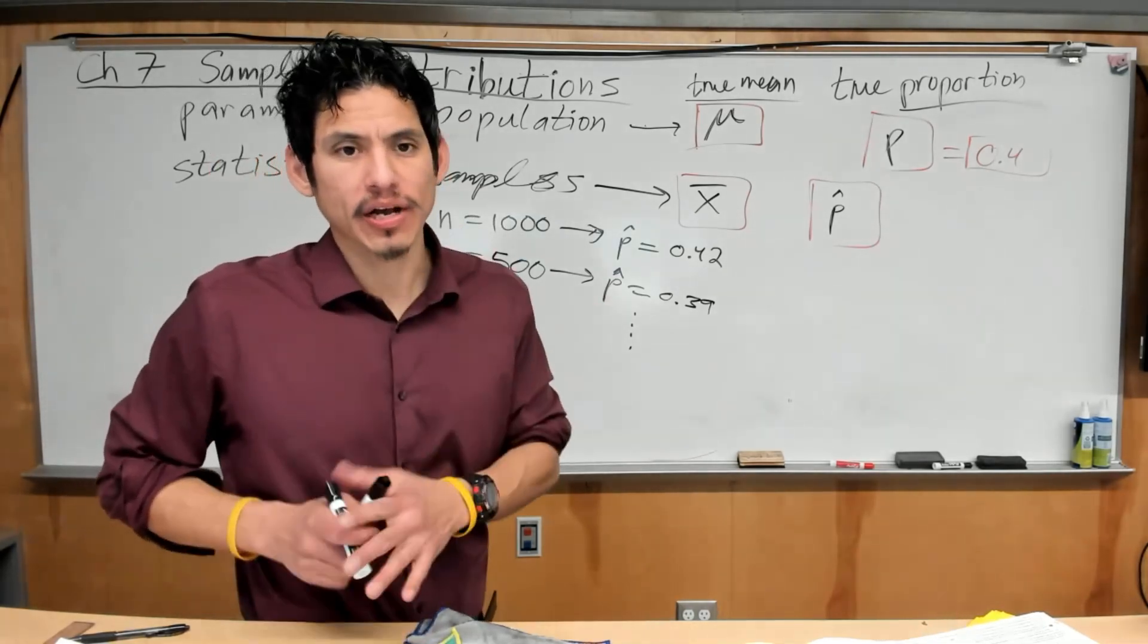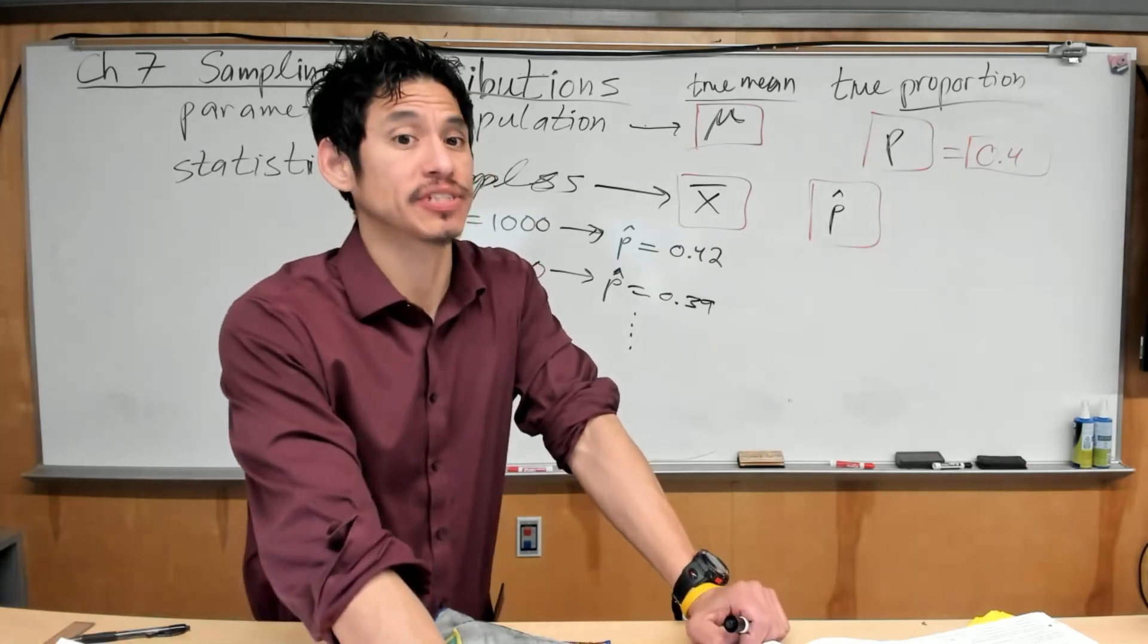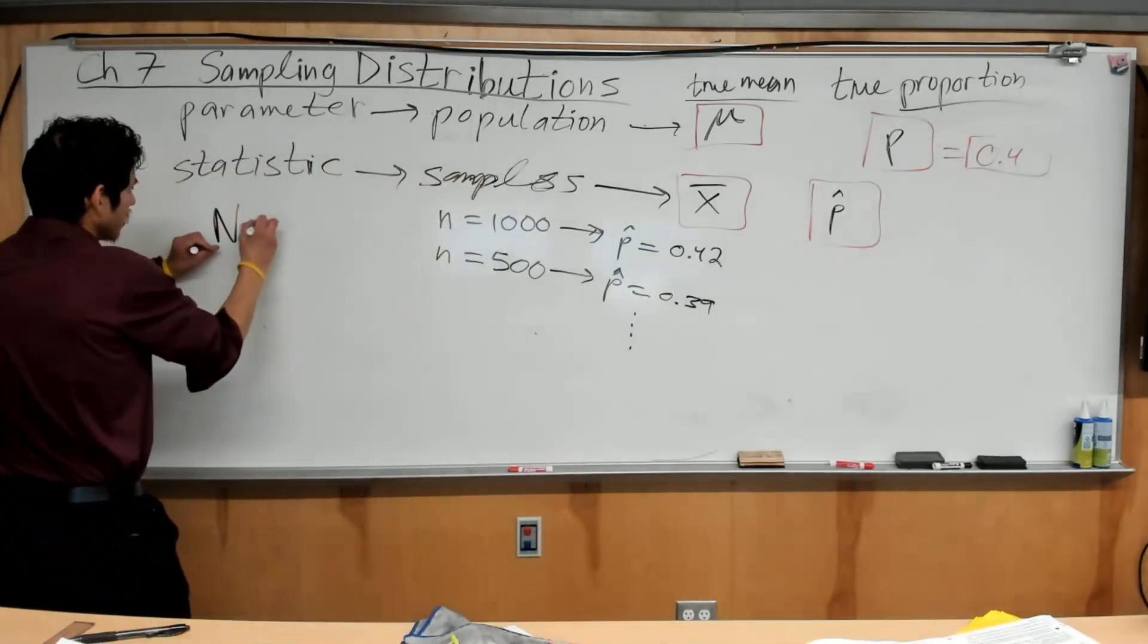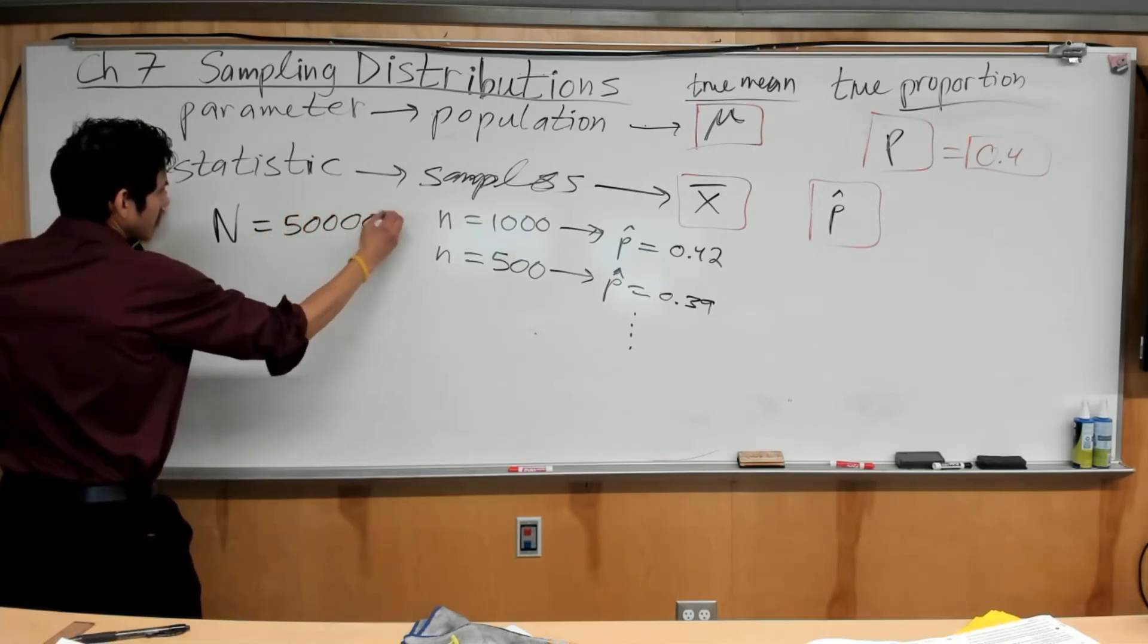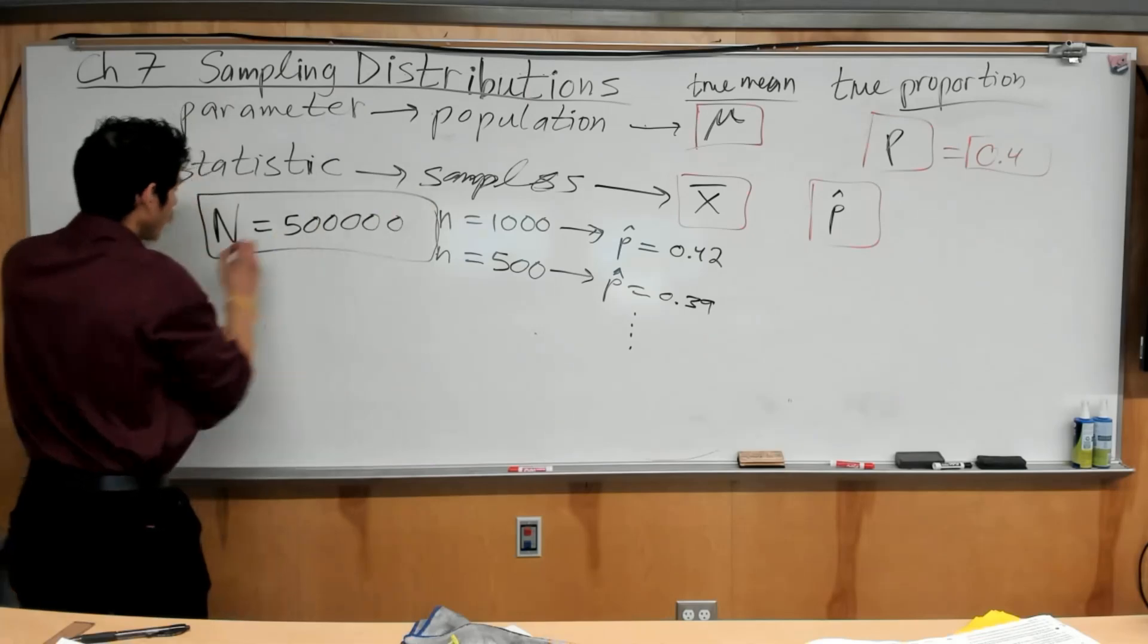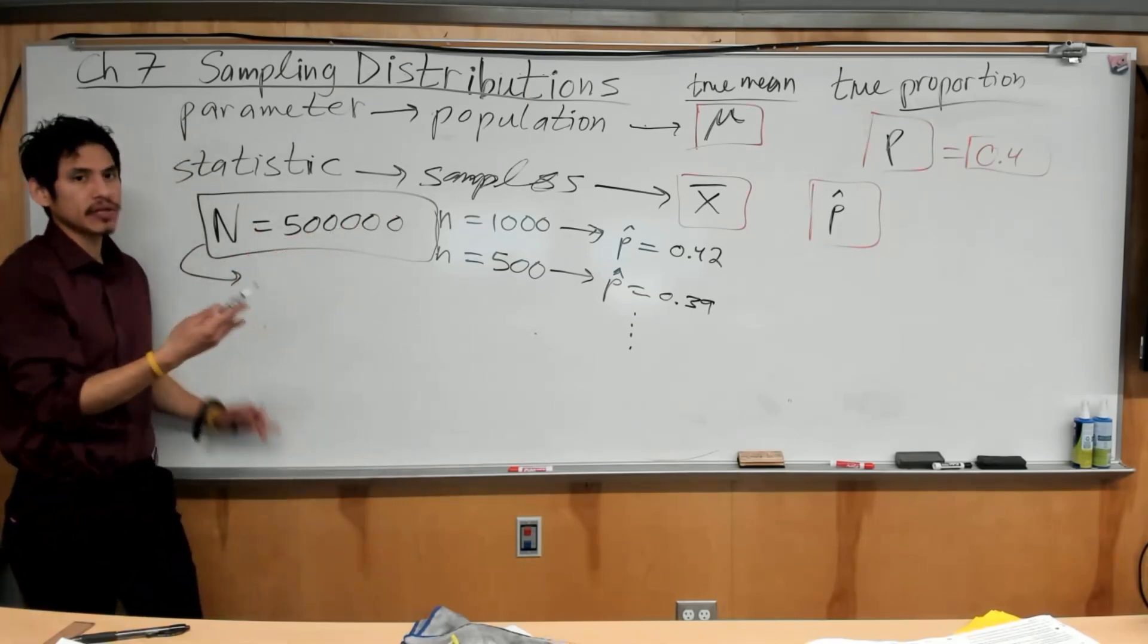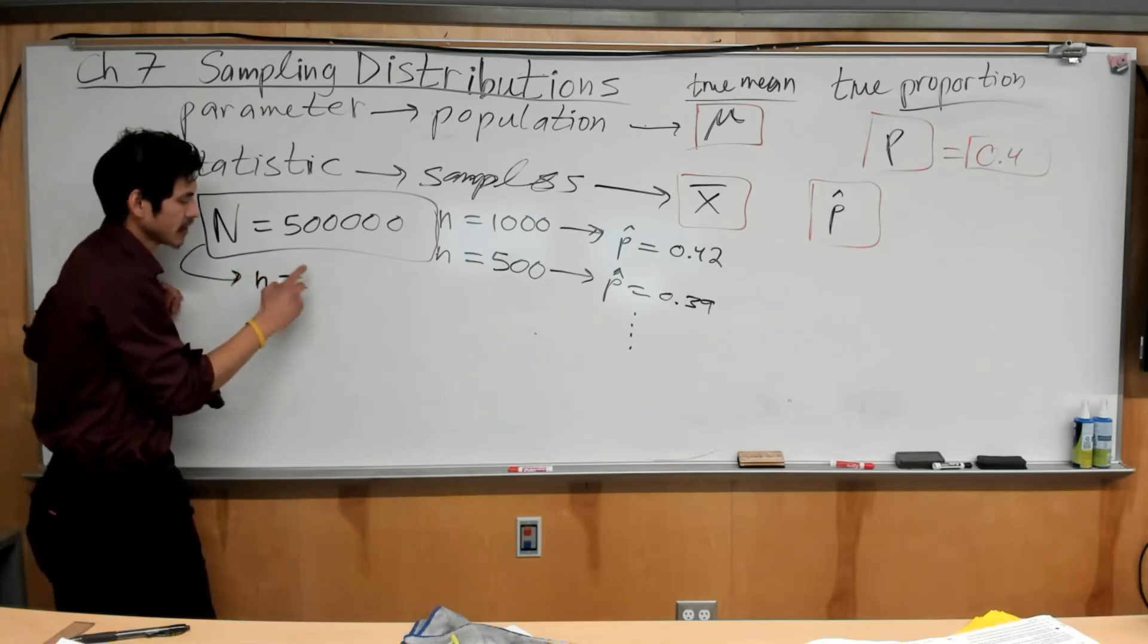However, we want to fix one of those values to be the same when we're talking about sampling distributions. Now, let's say our population, large N, is let's say you have 500,000 students in the population. You're not going to be able to sample and grab data from all half a million students. So you take samples of size 1,000, let's say.